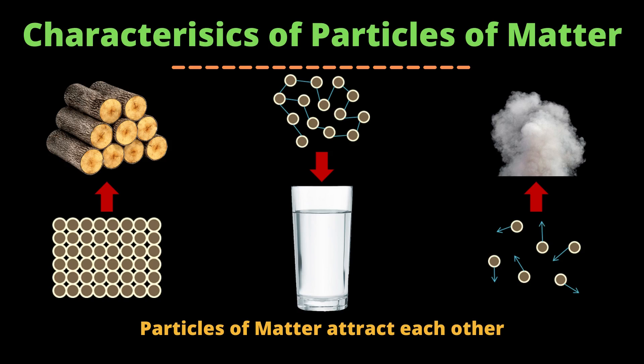Gases and liquids do not have a definite shape because they have a lesser force of attraction between their particles. So we learned there are three characteristics of particles of matter: one, particles of matter have space between them; two, particles of matter move continuously; and three, particles of matter attract each other.